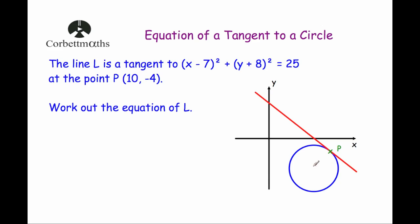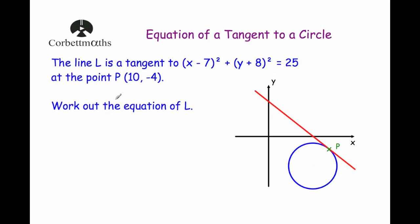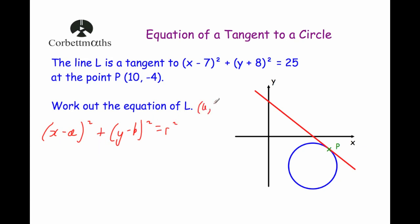First of all, we need to find the centre of the circle. To find the coordinates of the centre, we look at the equation of the circle. The equation of a circle is in the format (x − a)² + (y − b)² = r², so the centre of the circle is the point (a, b).